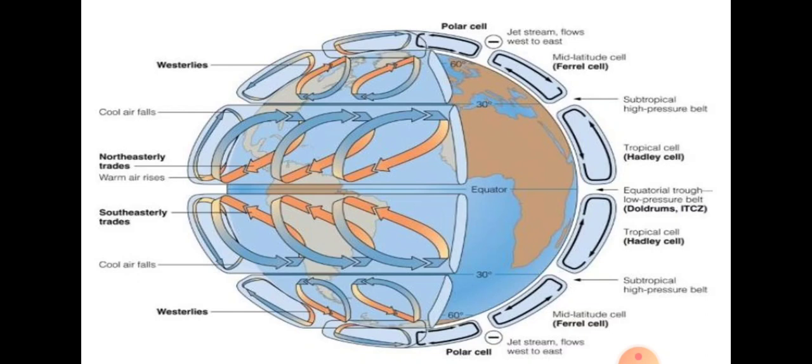Air always moves from hotter to colder areas. As the arrow shows, air from the equator moves toward 30° north and 30° south. When the equatorial area becomes vacant, cold air from 30° north and 30° south comes back toward the equator, gets heated again, and rises back to 30° north and south. This circulation creates the Hadley cell, situated in both the northern and southern hemispheres.